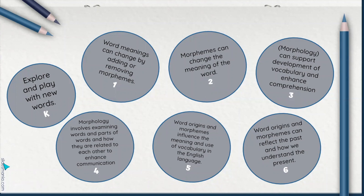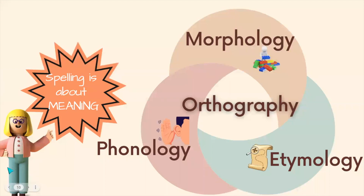Morphology is not mentioned explicitly in kindergarten, but looking at words and the parts that build words is a great way for students to explore and understand new words. Even though morphology is the word used within the curriculum, we have to remember that we can't focus on morphology in isolation. We have to talk about morphology at the same time as phonology and etymology. All of these pieces work together to help us understand why words are spelt the way they are.